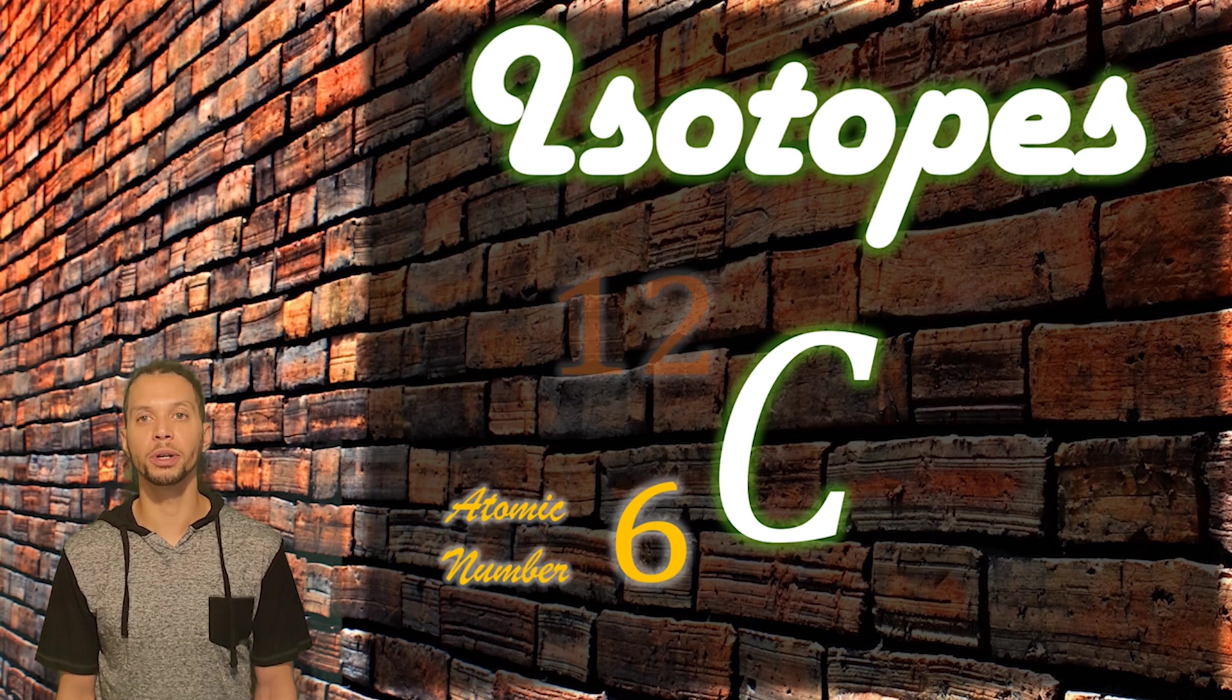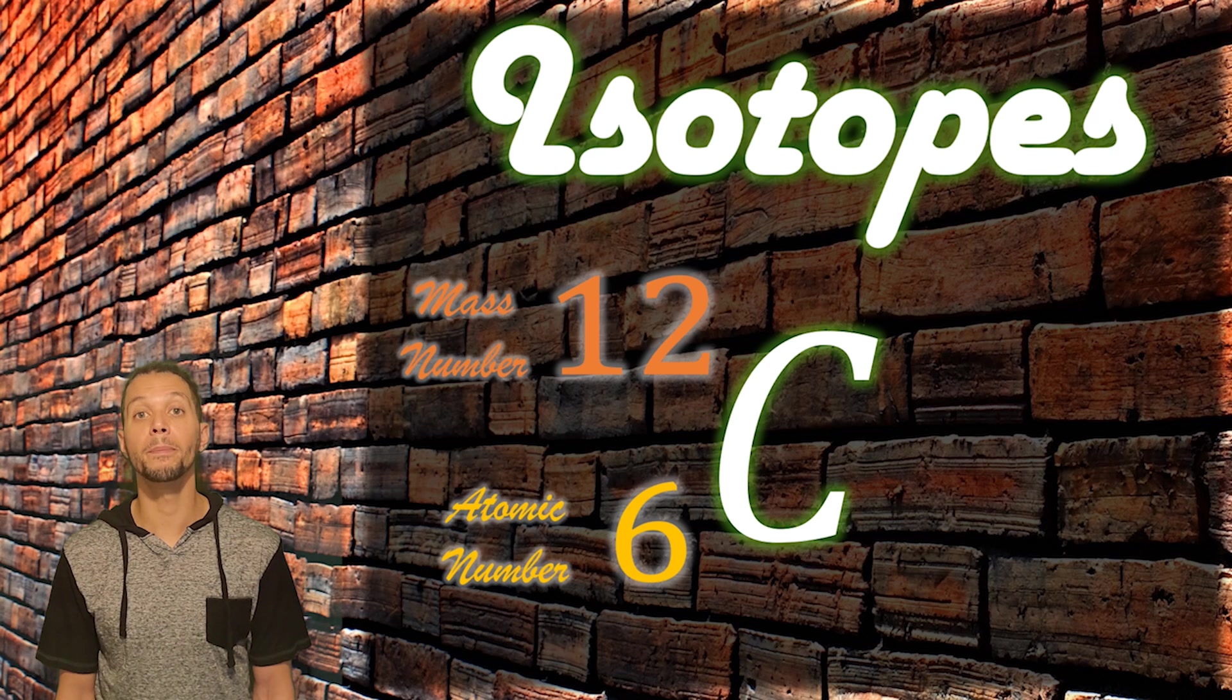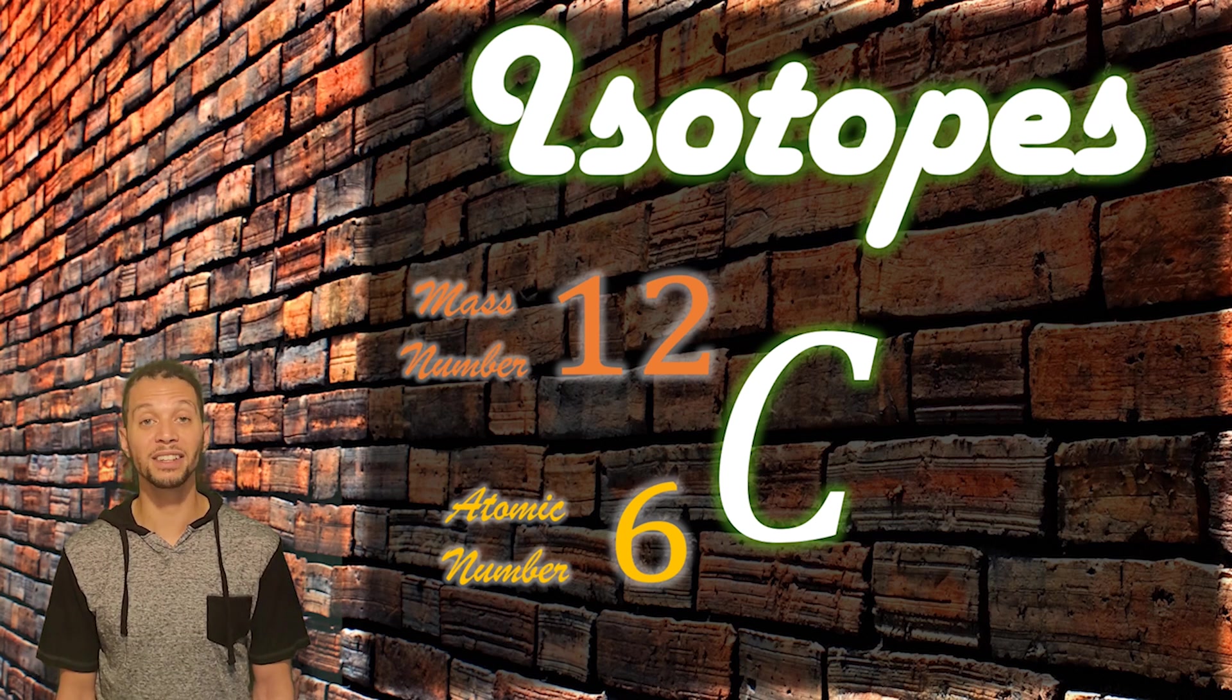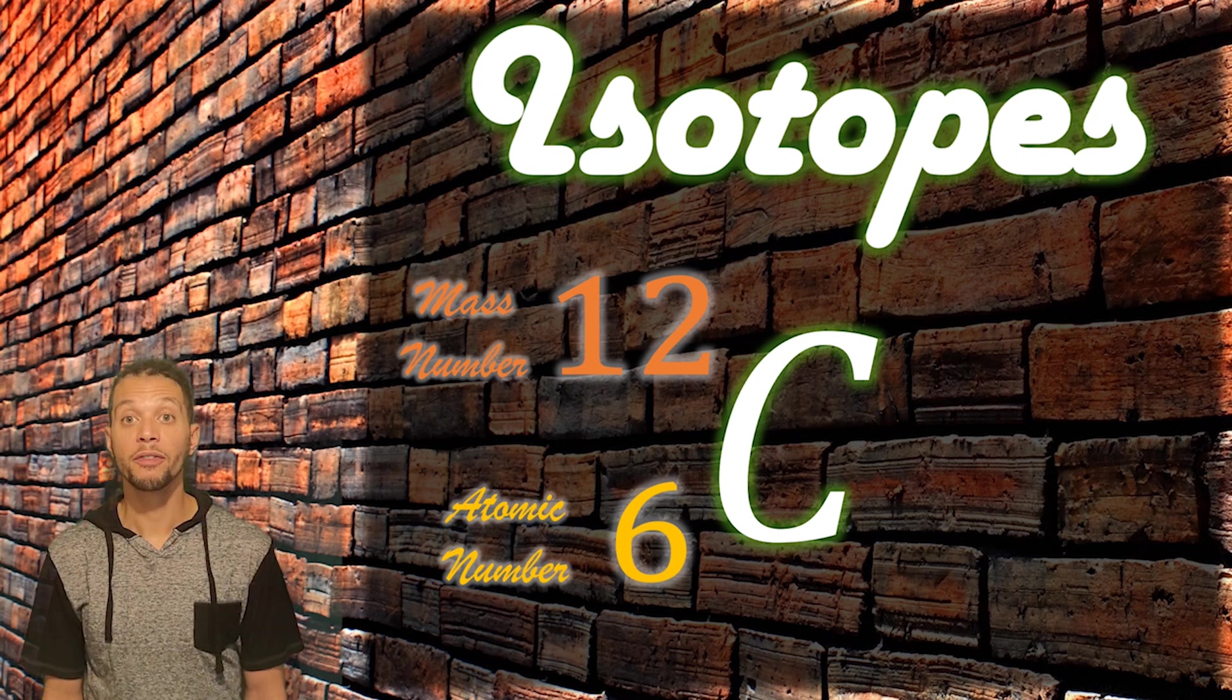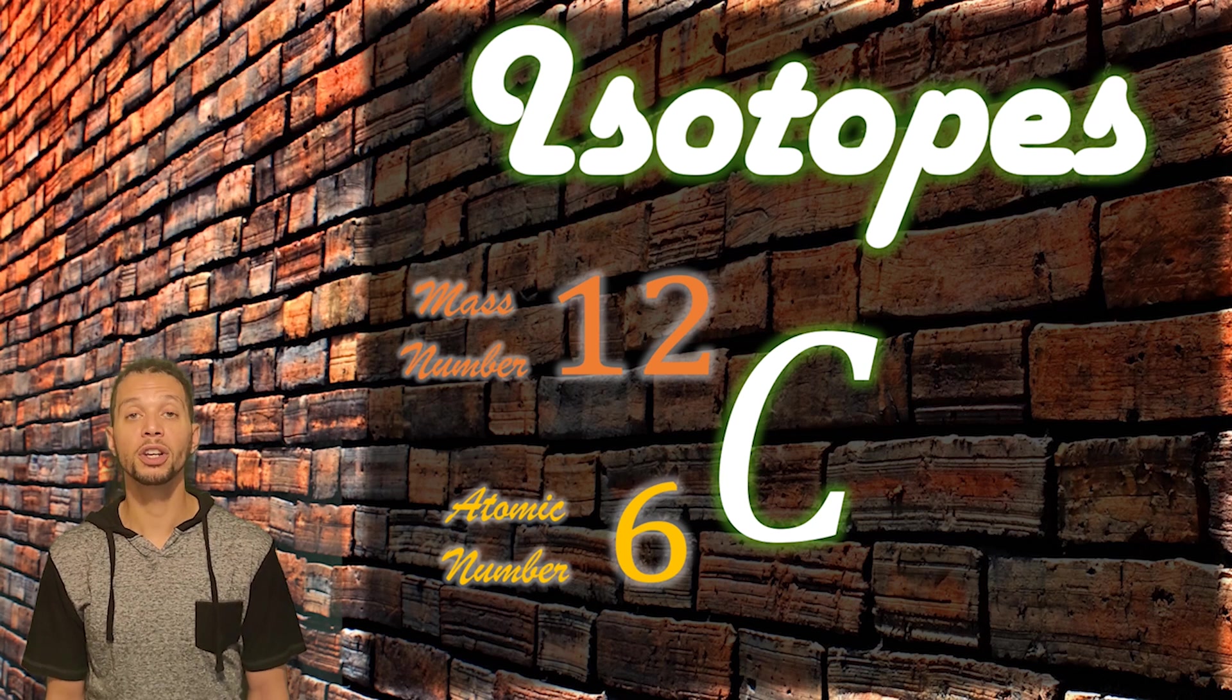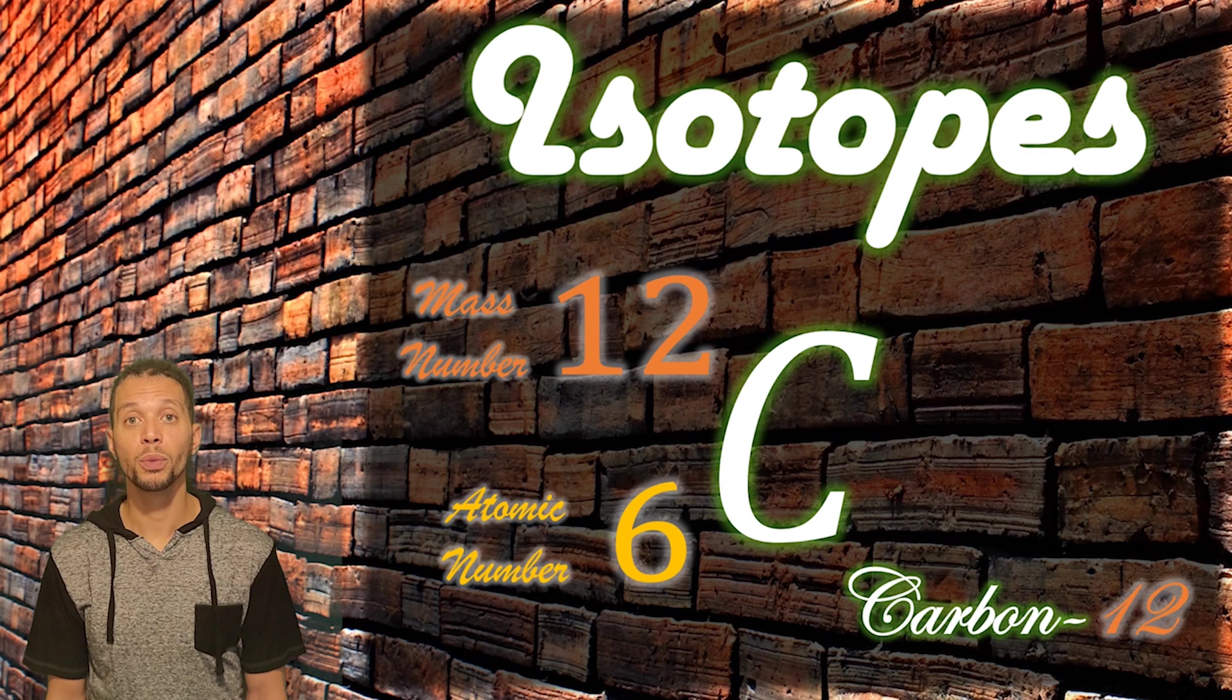In superscript form, at the top left corner of the chemical symbol, we write down the mass number of that specific isotope, because that is the number that will be different between the different isotopes of that element. For this example, we are referring to the carbon-12 isotope of the element carbon. We can also represent this by simply using the chemical name with the mass number written right next to it.